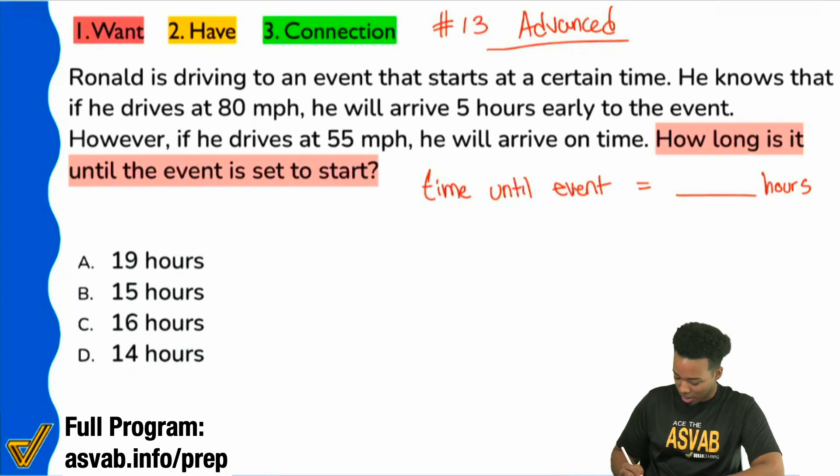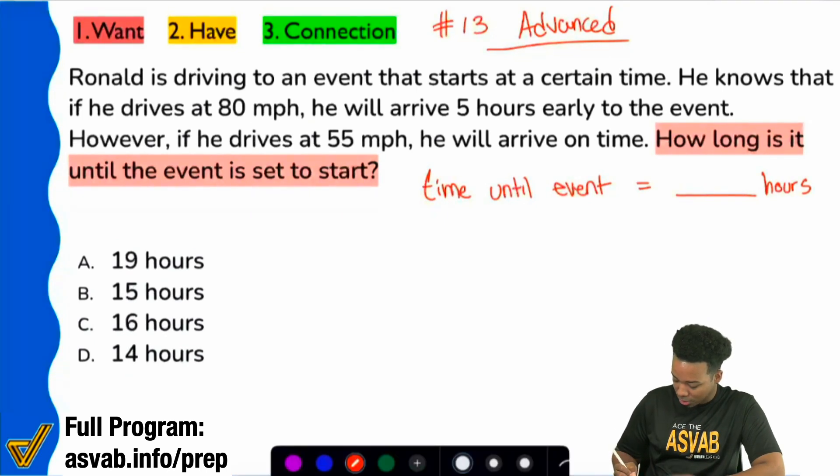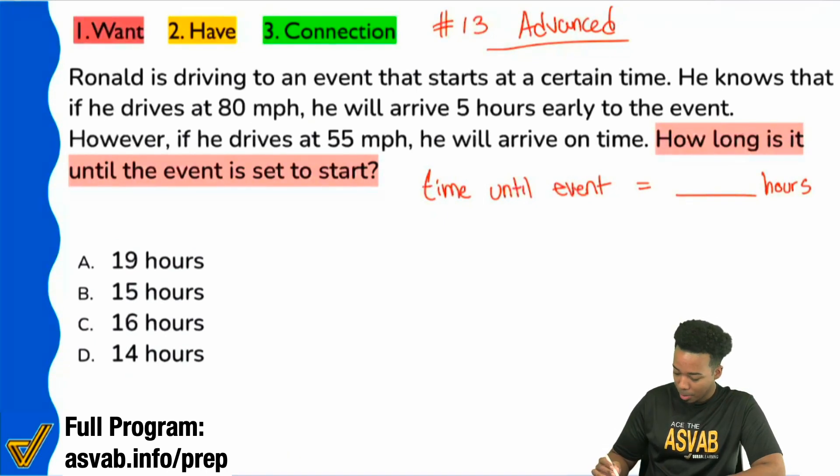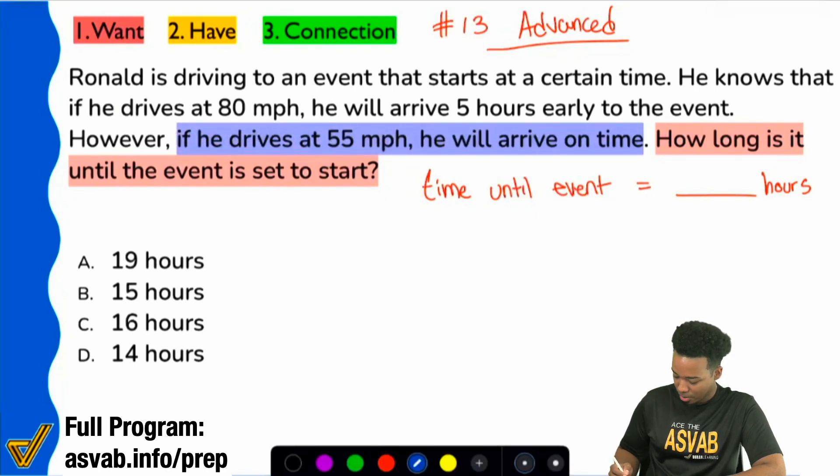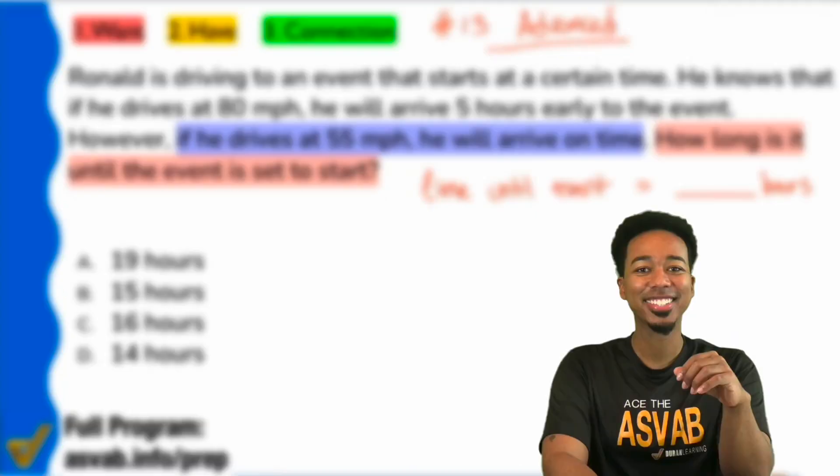On one hand, let's write this out. And to make it easier on you, I'm going to start with this one here. If he drives at 55 miles per hour, he'll be on time.